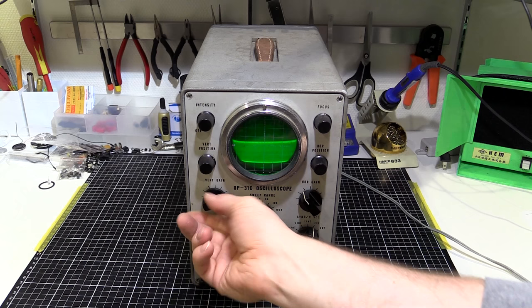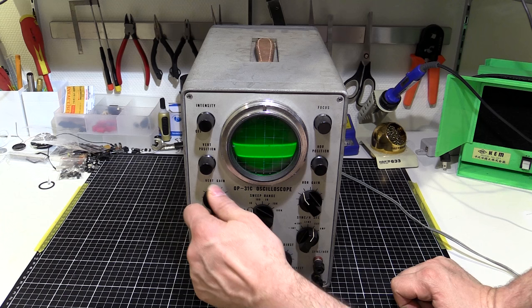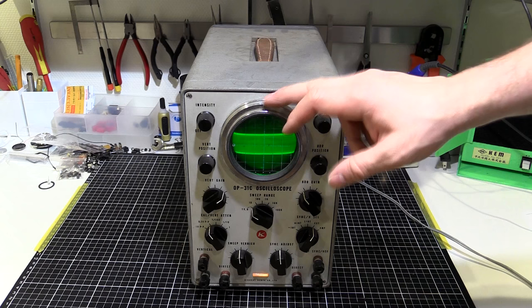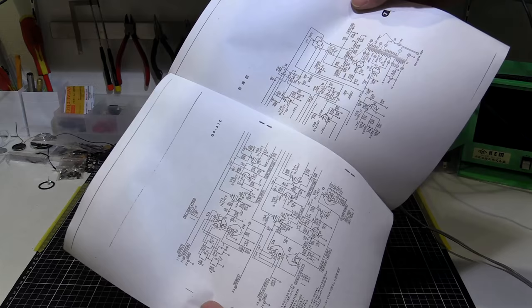You can see the pots are a little bit crunchy. We're going to open this thing up and have a look inside. I want to replace all the capacitors, clean all the pots, and hopefully it comes to good operating condition. I also managed to find schematics online, so it's going to make fixing this thing a little bit easier if we need to delve that deep.